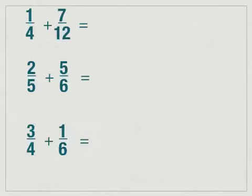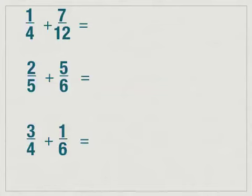Some examples of this: we have one-fourth plus seven-twelfths. Notice that I have a four and a twelve in the denominator. When I add, I have to have the same number in the denominator. I can get the same number by multiplying both the numerator and the denominator by the same number. So if you look at the denominators four and twelve, remember first we're going to ask ourselves, can the smaller number, four, go into the larger number, twelve? Four does go into twelve perfectly, because four times three is twelve.